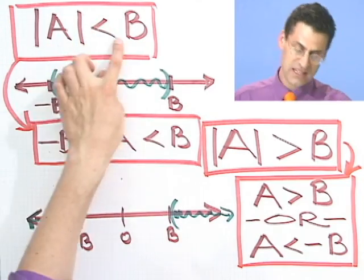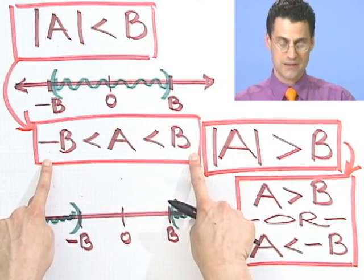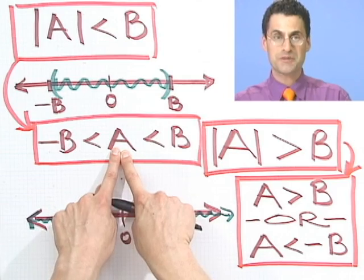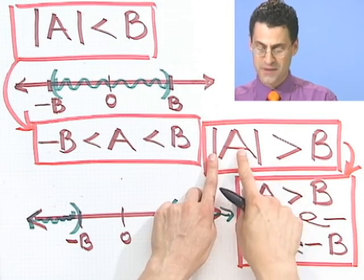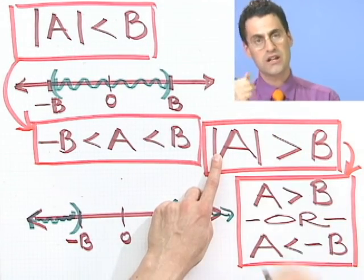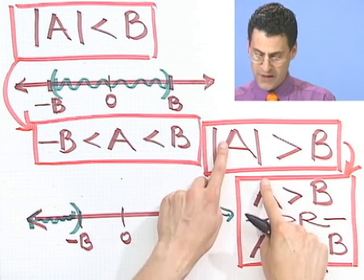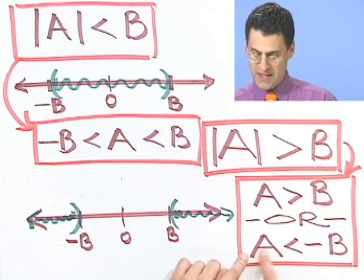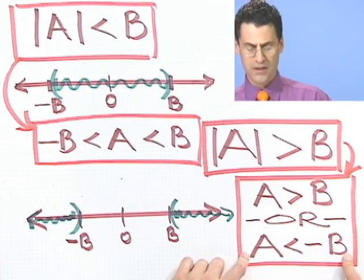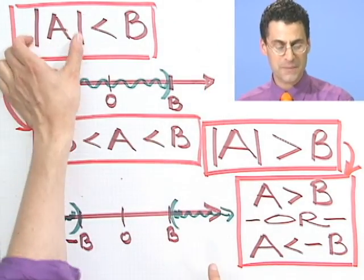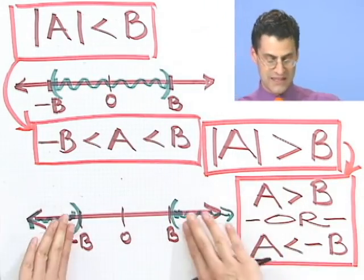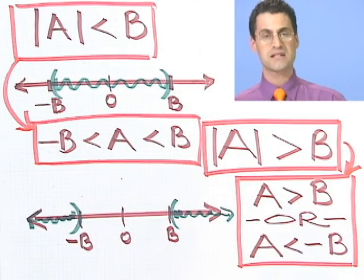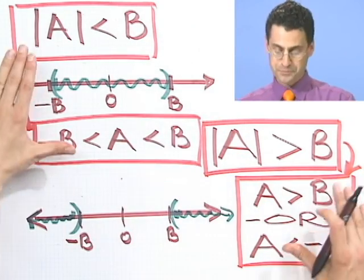The moral so far: if you see an inequality with absolute value less than something, convert it to a compound inequality where that thing is trapped between the something and minus the something. If the absolute value of something is bigger than something else, you have two inequalities to solve — that thing is greater than the something else, or smaller than negative the something else. Don't memorize this. Think of the picture. Small absolute value means near zero; large absolute value means far from zero. Write down the inequalities that correspond to those situations.